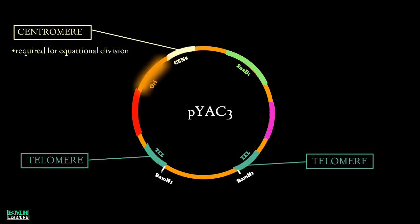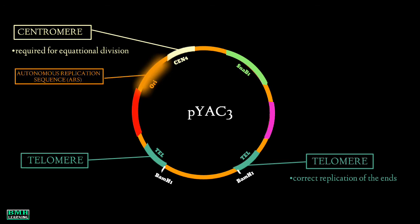The second element is two telomeric sequences, which are needed for the ends to be replicated correctly. Another element is an autonomous replication sequence, or ARS. ARS sequences are thought to act as replication origins and are required for replication and preservation of the yeast artificial chromosome in yeast cells.